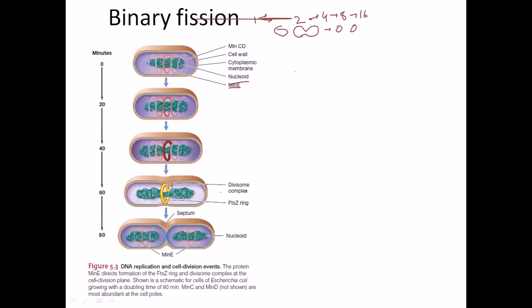Using that central MinE, a new protein called FtsZ starts to assemble and forms a ring called the FtsZ ring. Formation of the FtsZ ring is very vital. The FtsZ ring must form at the exact center of the bacterial cell, because once the cell starts to divide it becomes slightly elongated and stretched in both directions. The MinE protein detects which is the center of this stretched bacterial cell, then FtsZ proteins assemble to form the FtsZ ring.